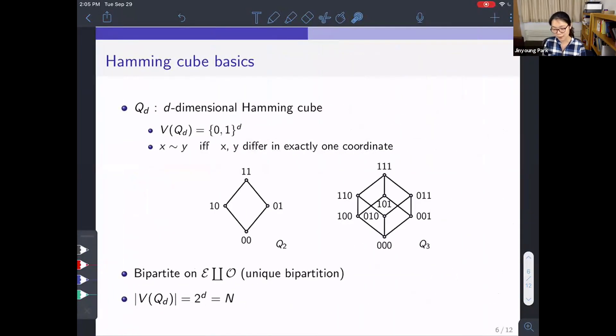Then let's move our attention to the Hamming cube. Here are some basics. We use Q_d for the d-dimensional Hamming cube. This is defined in this way. Q_d is a graph whose vertices are binary strings of length d. And two vertices are adjacent if and only if they differ in exactly one coordinate. Here you see, we see the picture of Q_2 and Q_3.